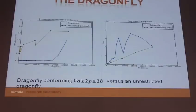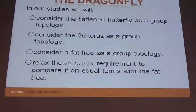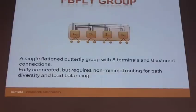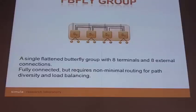In the rest of the study we will concentrate on the unrestricted dragonfly, meaning we will not worry about fulfilling this equation. In addition to the originally recommended dragonfly with a flattened butterfly as the group topology, we will also look at groups using a 2D torus and a fat-tree. For the flattened butterfly: it's not a non-blocking topology, it is fully connected, but you have to apply non-minimal routing for good load balancing and path diversity. It's fairly cost-effective, and in this representation with P=2, H=2, it fulfills the equation given in the original paper.